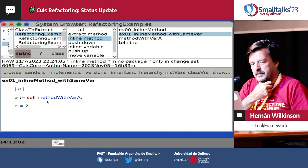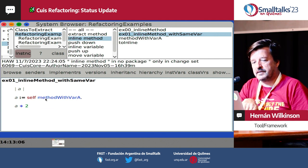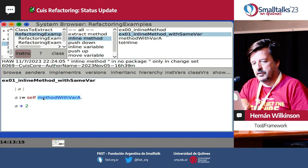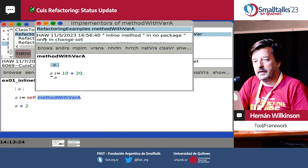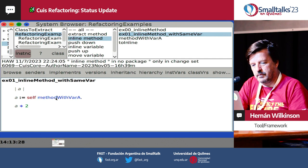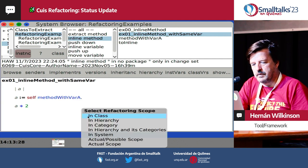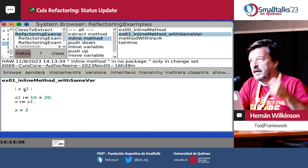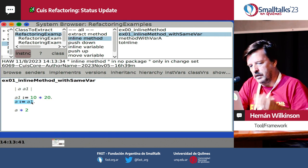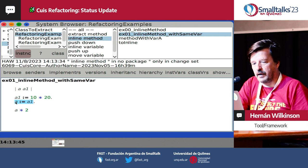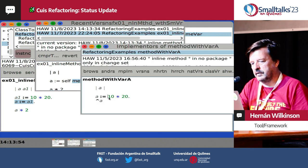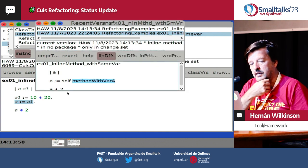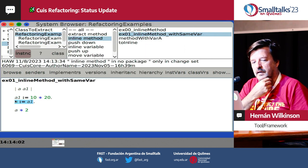The other interesting thing about inline is that sometimes you want to inline a method that defines a variable already defined in the target method. So we have a variable A here, but if we look at the implementation of this message, we can see there's also a variable called A. The inline recognizes that variable and renames it to a different one — in this case A1. Before we had a method with var A, and this was 10 times 20. So it inlined that, put the result in A1, and then used A1.